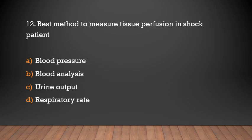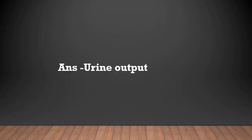Best method to measure tissue perfusion in a shock patient: blood pressure, blood analysis, urine output, respiratory rate. Answer: Urine output — it is one of the best methods to measure tissue perfusion in a shock patient.